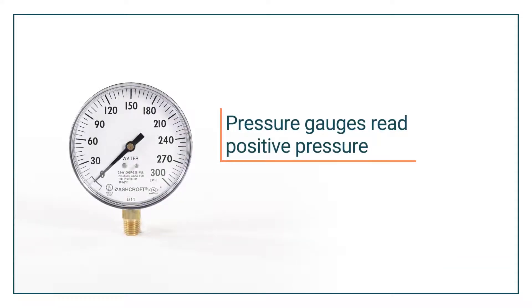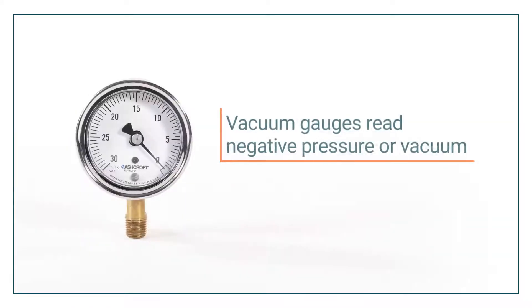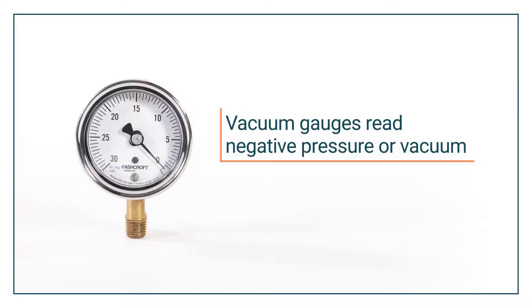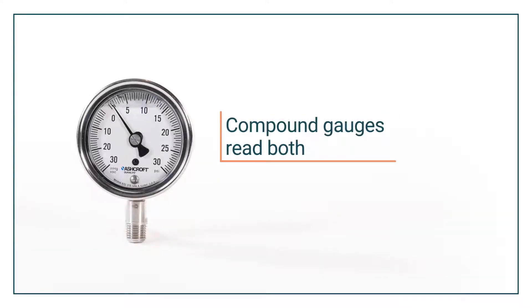Pressure gauges read positive pressure. Vacuum gauges read negative pressure or vacuum. And compound gauges read both.